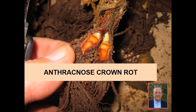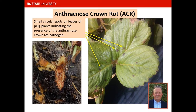Switching to individual diseases — anthracnose crown rot. This is a classic symptom: you cut the crown open lengthwise and see this sort of marbling inside, which is often diagnostic of anthracnose crown rot caused by Colletotrichum. This is a fungal pathogen we've dealt with for many years. It's a chronic problem in nursery plants and you do see some fall plant death from anthracnose just about every year. On plug plants, you may also see small circular spots on the leaves before they're even planted, indicating the anthracnose crown rot pathogen is present.